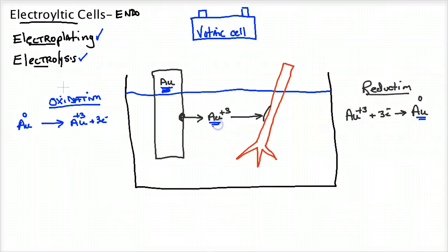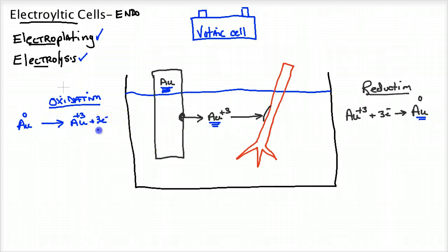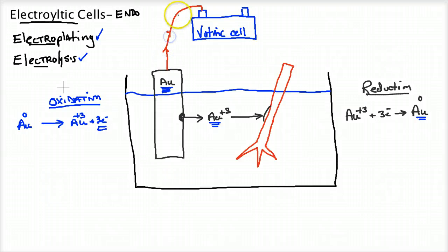In truth, Au³⁺ is pretty good at reducing, because if it's not spontaneous in oxidation, then it's going to be spontaneous in reduction. Voltages are directionalities in reactions. We're forcing gold to oxidize, so I'm going to need to pull electrons away from the gold. To do so, I connect my gold electrode in this electrolytic cell — not a voltaic cell — to the battery. I want to pull electrons this way, to make my gold become Au³⁺ so that it can plate over on the fork.